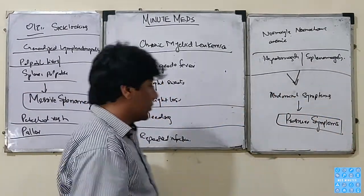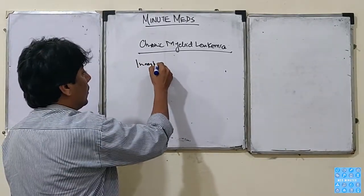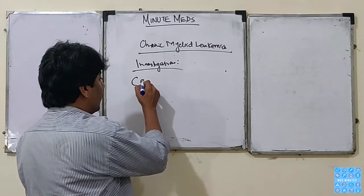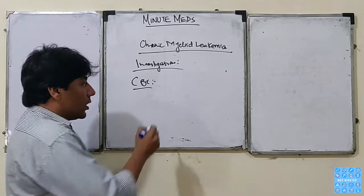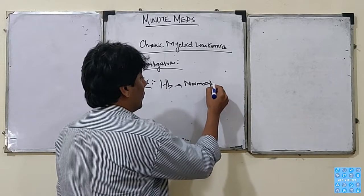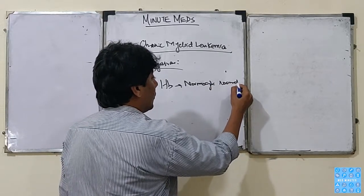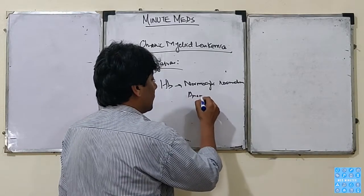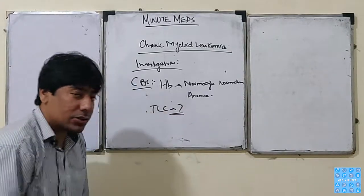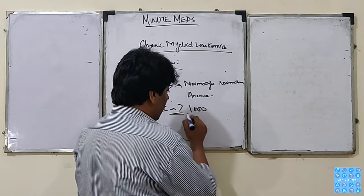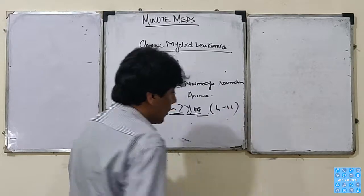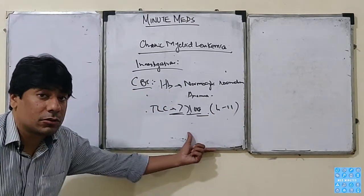How do we investigate such a patient? We start with the complete blood picture. The white cell count is markedly elevated — more than 100, up to 600, if you get these values.